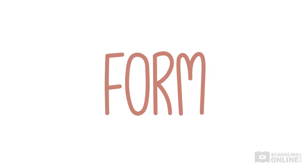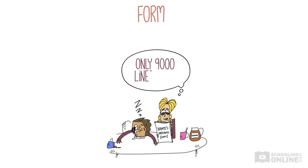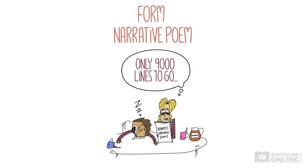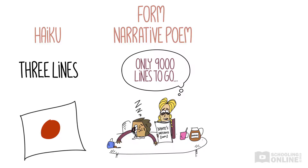Poems come in all shapes and sizes. We use the word form to describe each type of poem. For example, Dante's Inferno is an epic poem with over 14,000 lines — its form is a narrative poem, which means it's a really long poem about an epic journey. In contrast, the haiku only has three lines. Haikus originated in Japan and often capture a moment in time that the poet spent contemplating about nature.